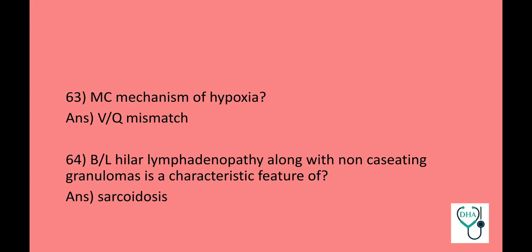Most common mechanism of hypoxia in humans: ventilation-perfusion mismatch. Bilateral hilar lymphadenopathy along with non-caseating granulomas is a characteristic feature of sarcoidosis.